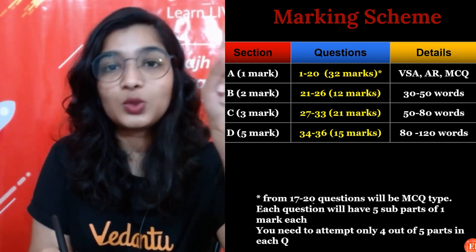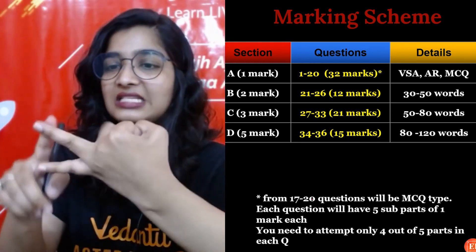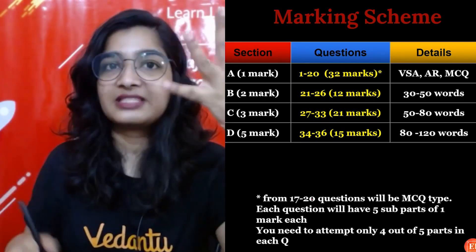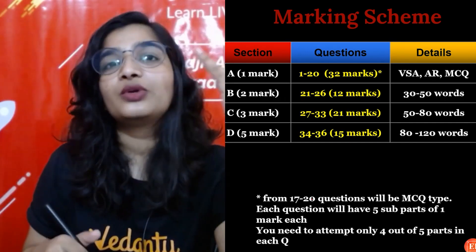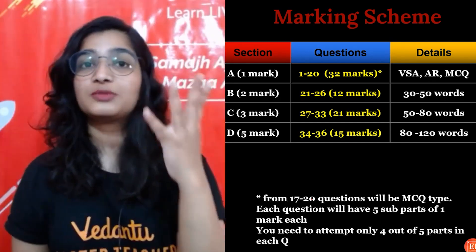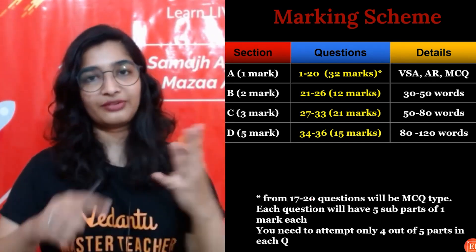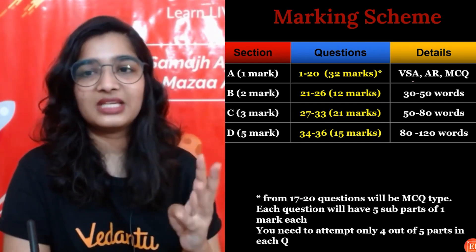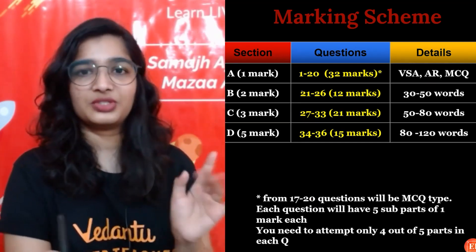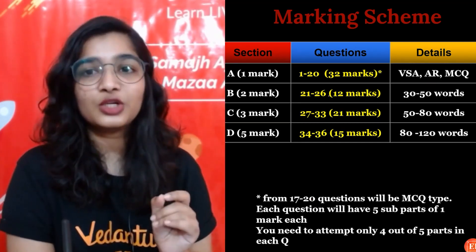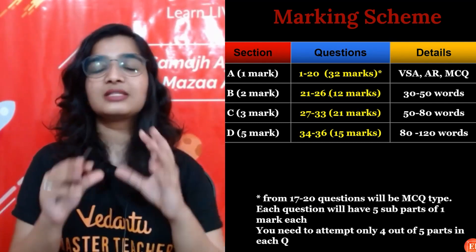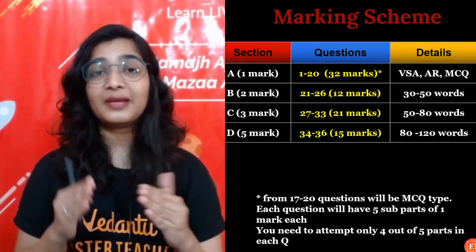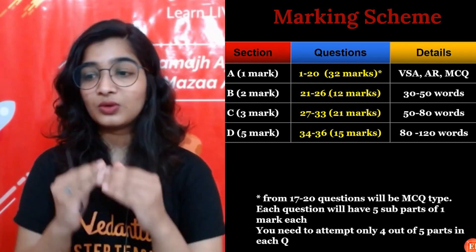Questions 17 to 20 in Section A will have five sub-parts of MCQ type, and you need to attempt only four out of five parts in each question. Section A contains VSA, assertion-reasoning, and MCQ type questions. Section B carries a total of 12 marks, and answers should be 30 to 50 words. Time management is very, very important.